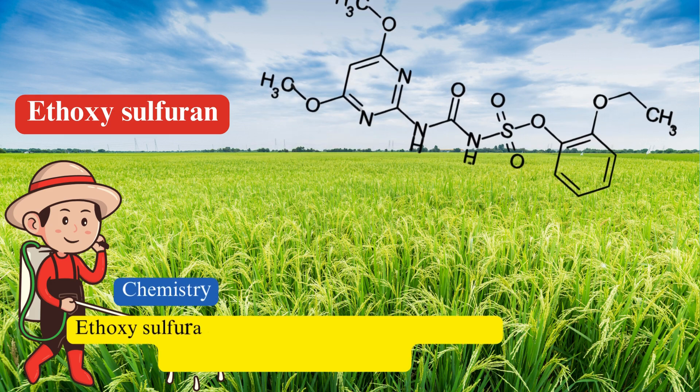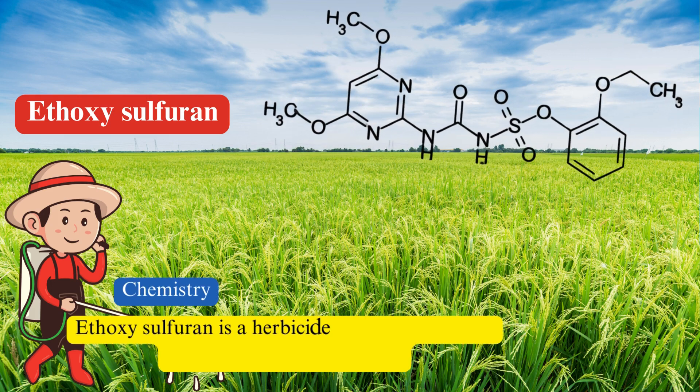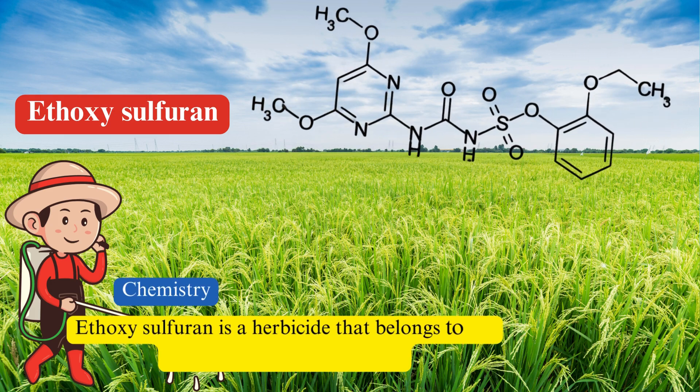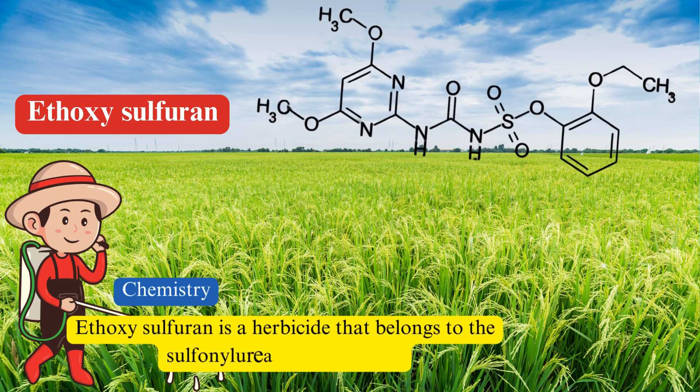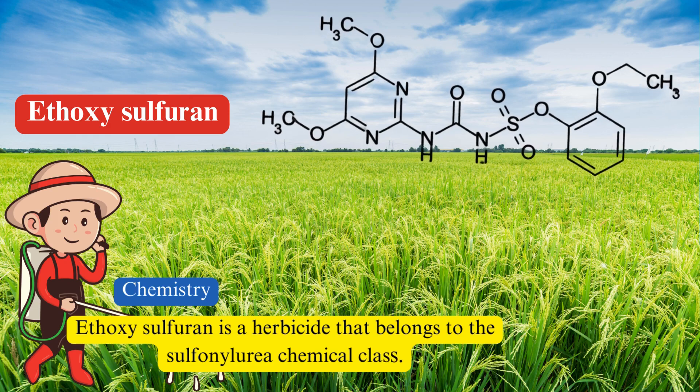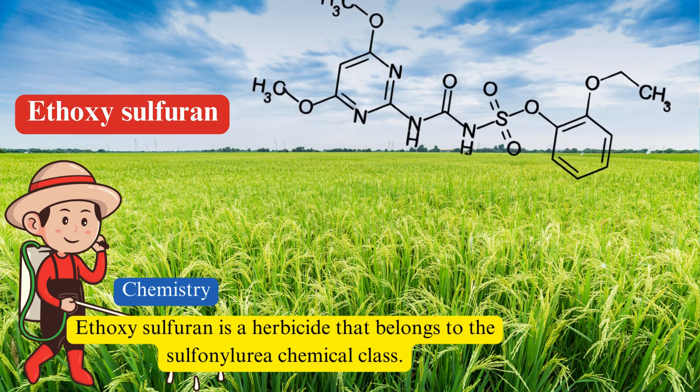Chemistry. Ethoxysulfuron is a herbicide that belongs to the sulfonylurea chemical class.